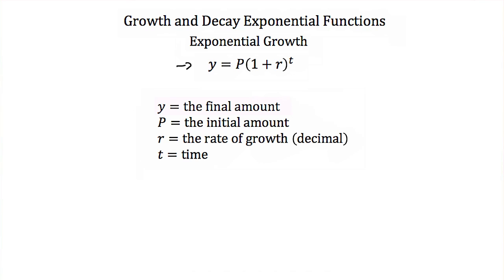y is our final amount, p is the amount that we start with, r is our rate of growth, which is usually a percentage. When we plug that percentage into this formula, we always express r as a decimal. And lastly, t is time.